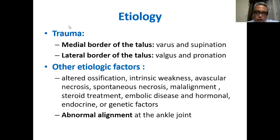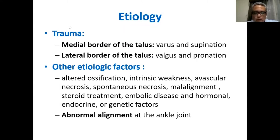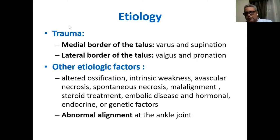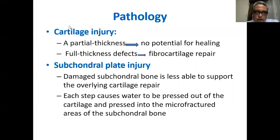Other causes that might lead to osteochondral lesions include altered ossification, intrinsic weakness of the cartilage or the supporting subchondral bone, avascular necrosis of the subchondral bone, spontaneous necrosis, malalignment, steroid use, thromboembolic manifestations, and endocrine or genetic factors. The abnormal alignment of the ankle joint can be a major predisposing factor for osteochondral lesions.